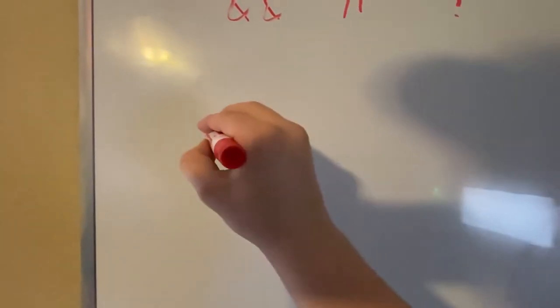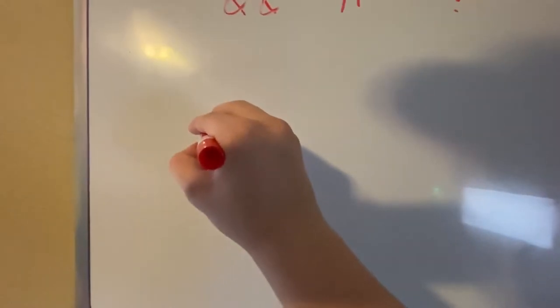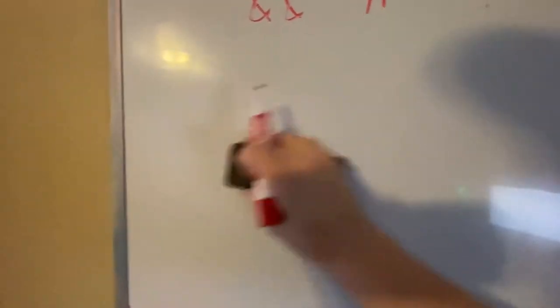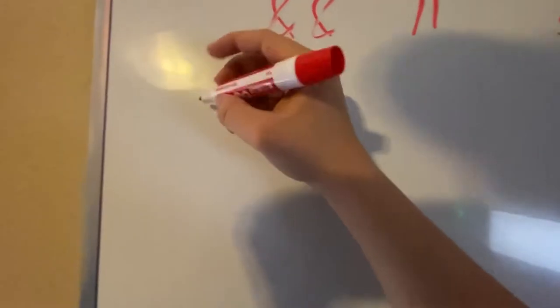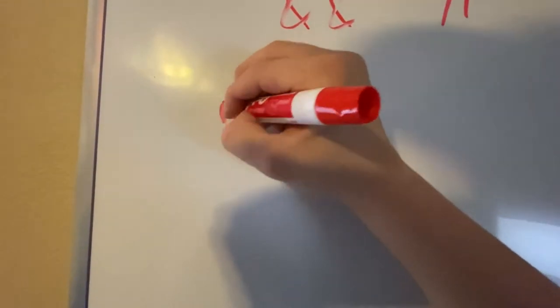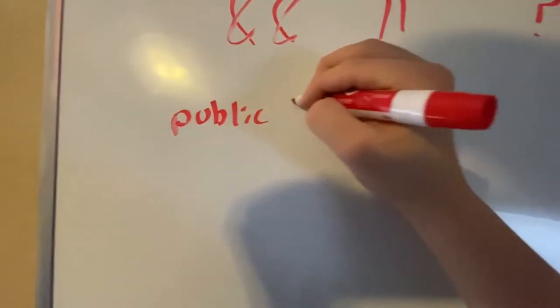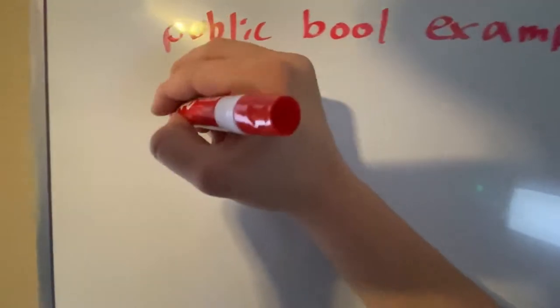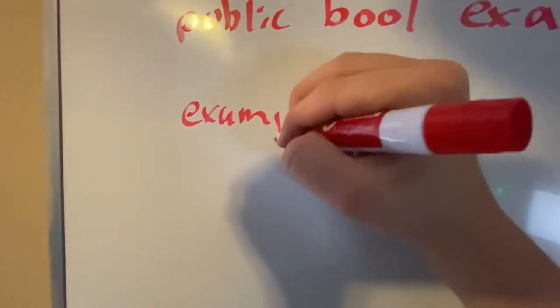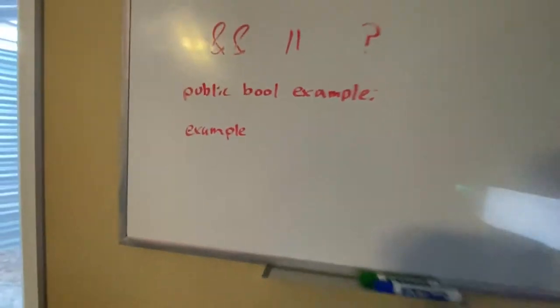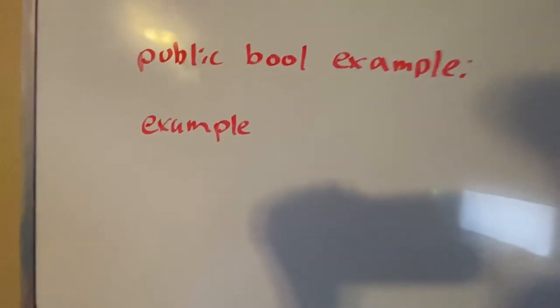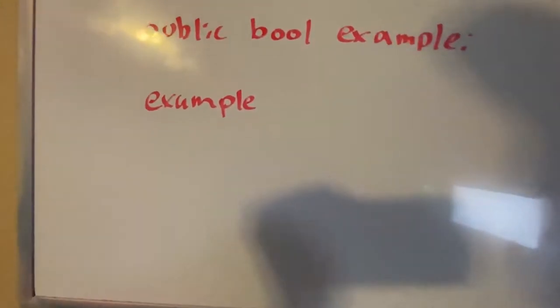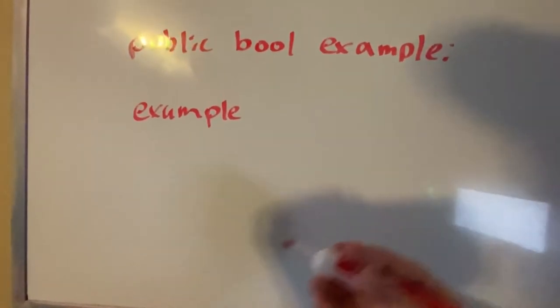One. So let's say we have an if statement, or we want to set, let's not do an if statement. Let's just have a bool. So let's just say we, for example, we have a public bool. Now let's say we want to set example in our method. Obviously I don't have the public static void main, but you should know that by now that you need to have that.